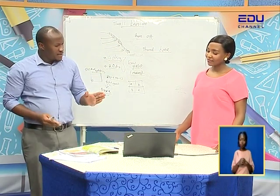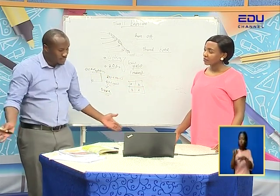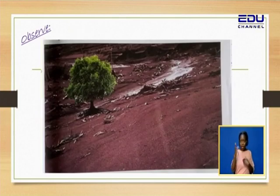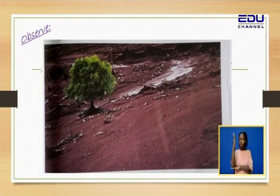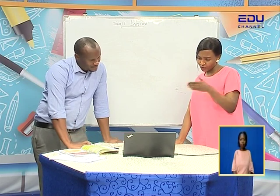What happens when the water is flowing away? When it is flowing away, it is carrying the top part of the soil — the most fertile part. That is what we call the humus, where the organic matter is. Let's observe a picture and talk about what you can see. I can see a tree — a green tree — and what looks like dead crops. I can see a little bit of water following a channel.